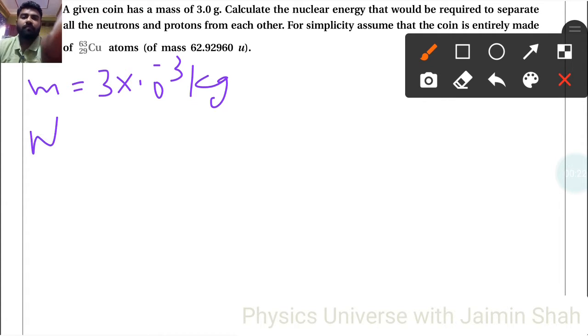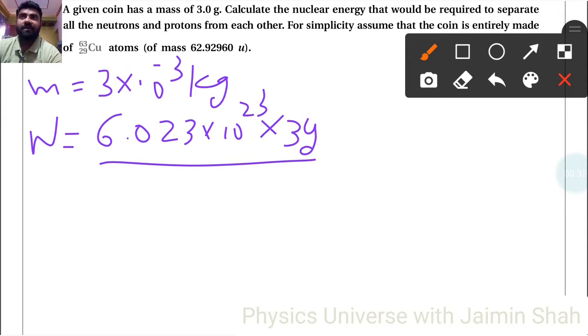Total number of atoms in copper, that is 6.023×10^23. Now we have a mass that is 3 grams, so here we have to write as 3 grams because atomic numbers are in grams.